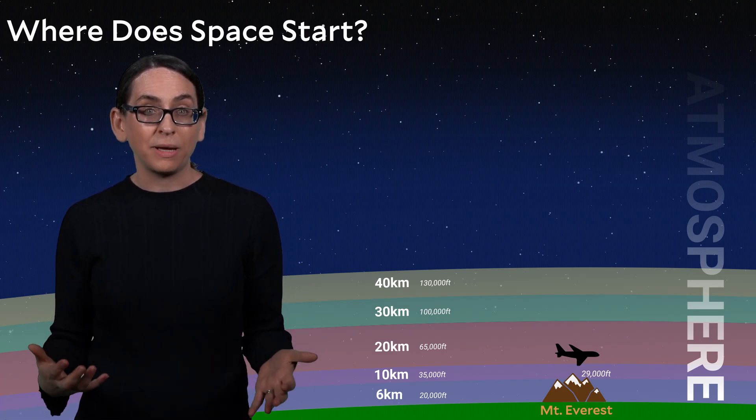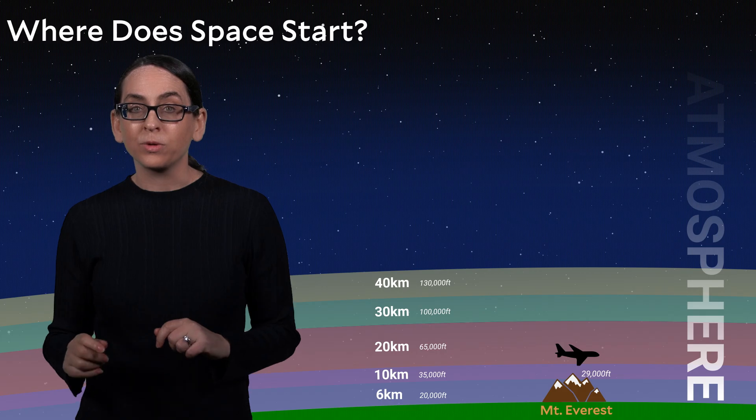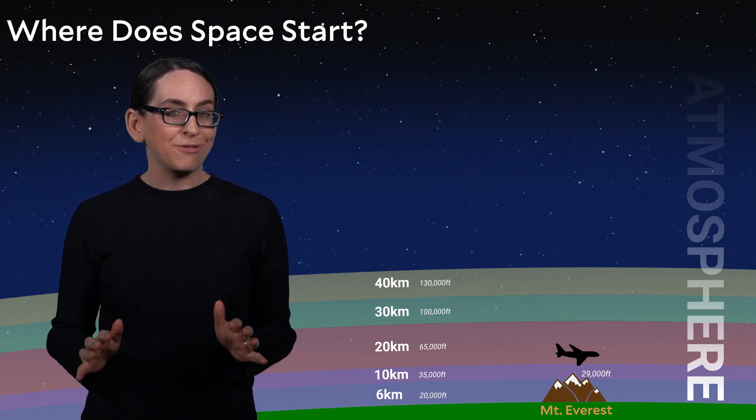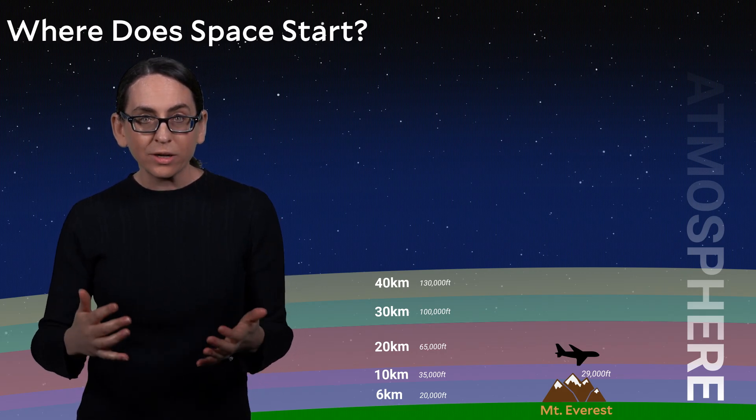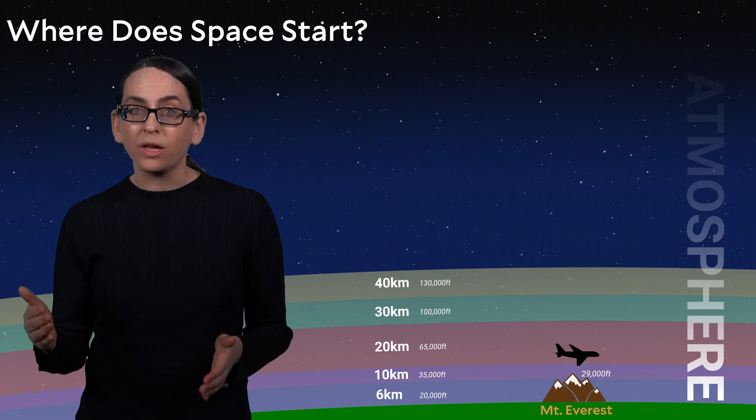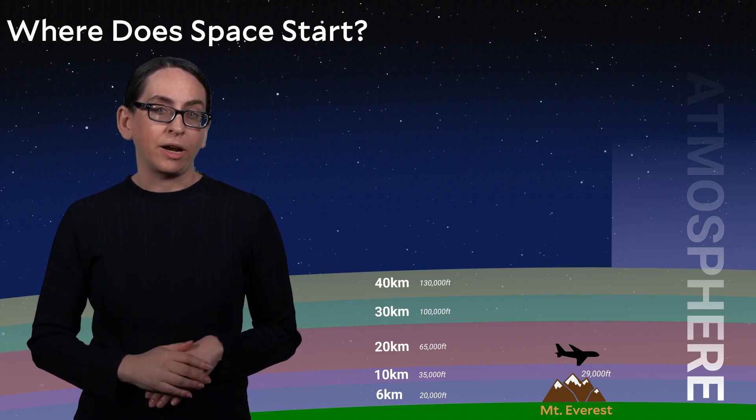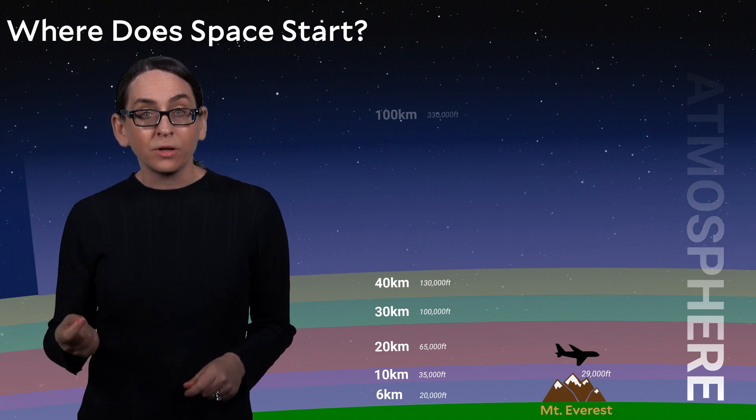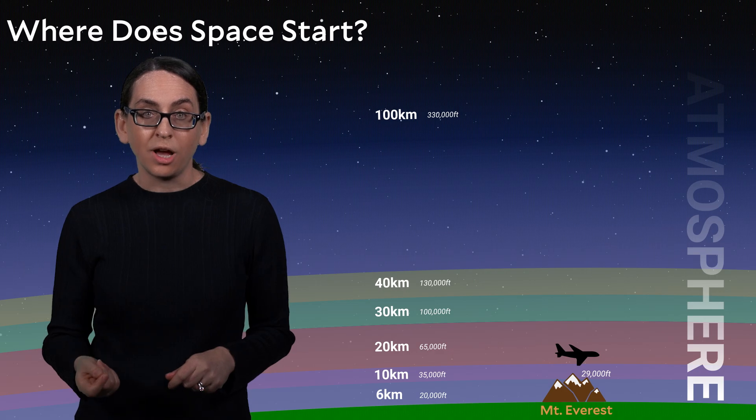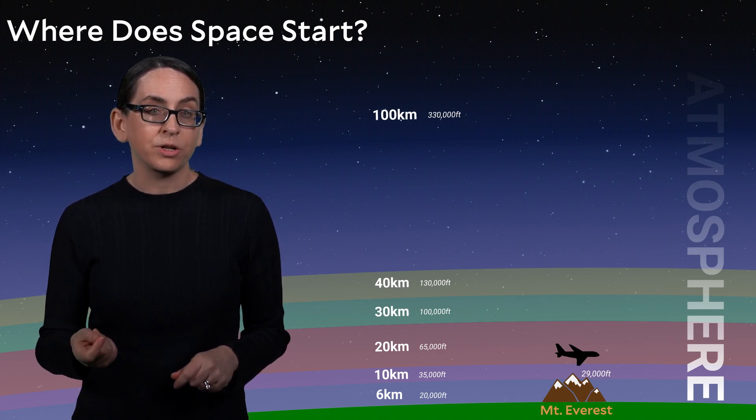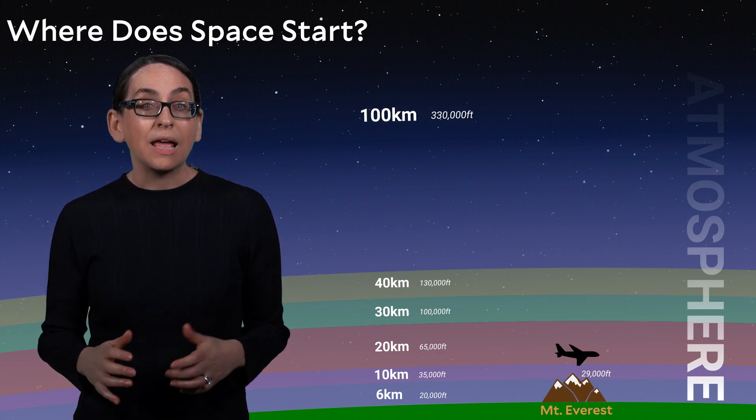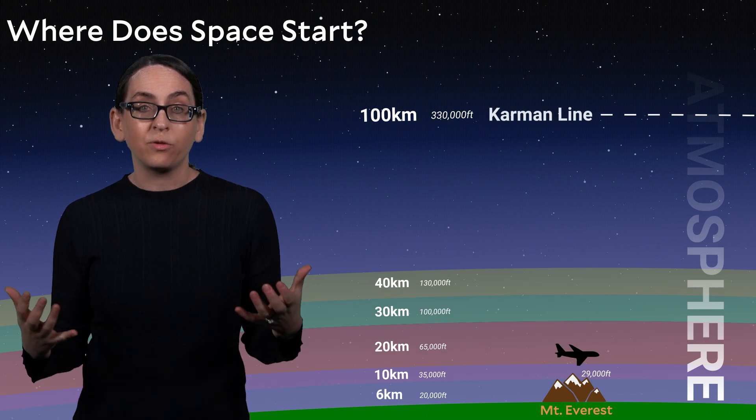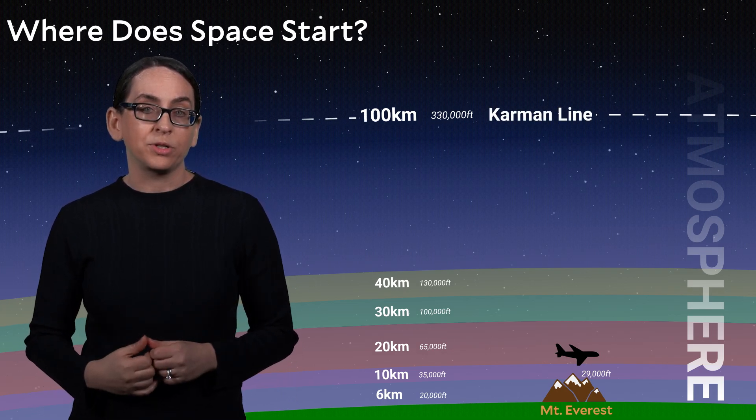In thinking about how to define space, Theodore von Karman wrote some influential papers in about the 1950s asking, where does the atmosphere get so thin that there's just no hope of flying an airplane. The limit that von Karman came up with was 100 kilometers above the Earth's surface or 330,000 feet. And that is currently the international definition of where space starts, 100 kilometers above the Earth's surface.